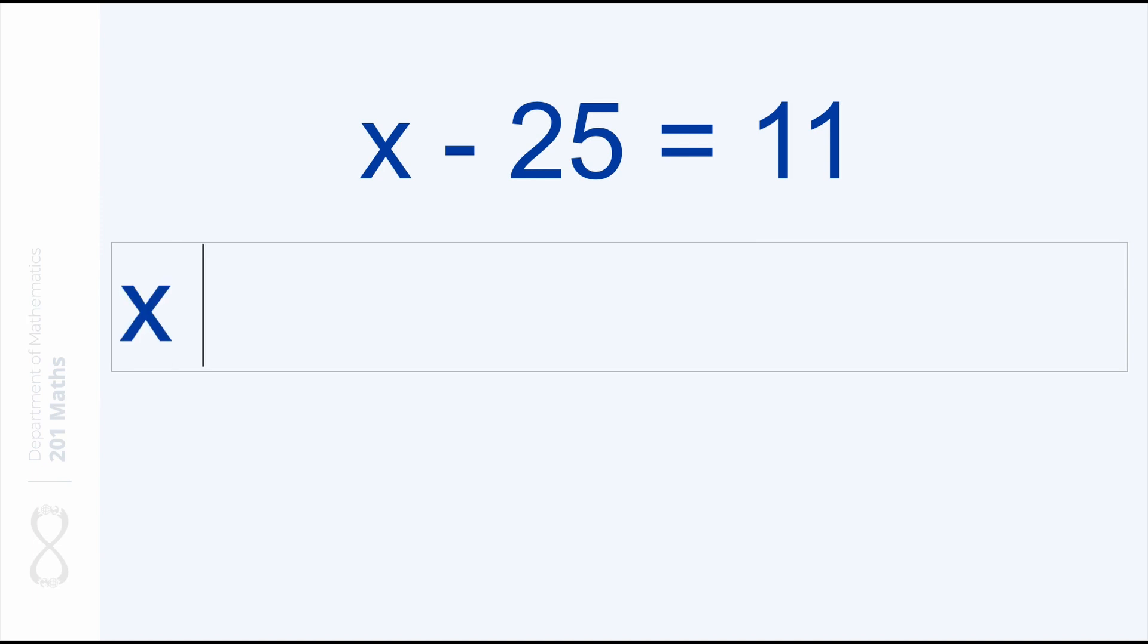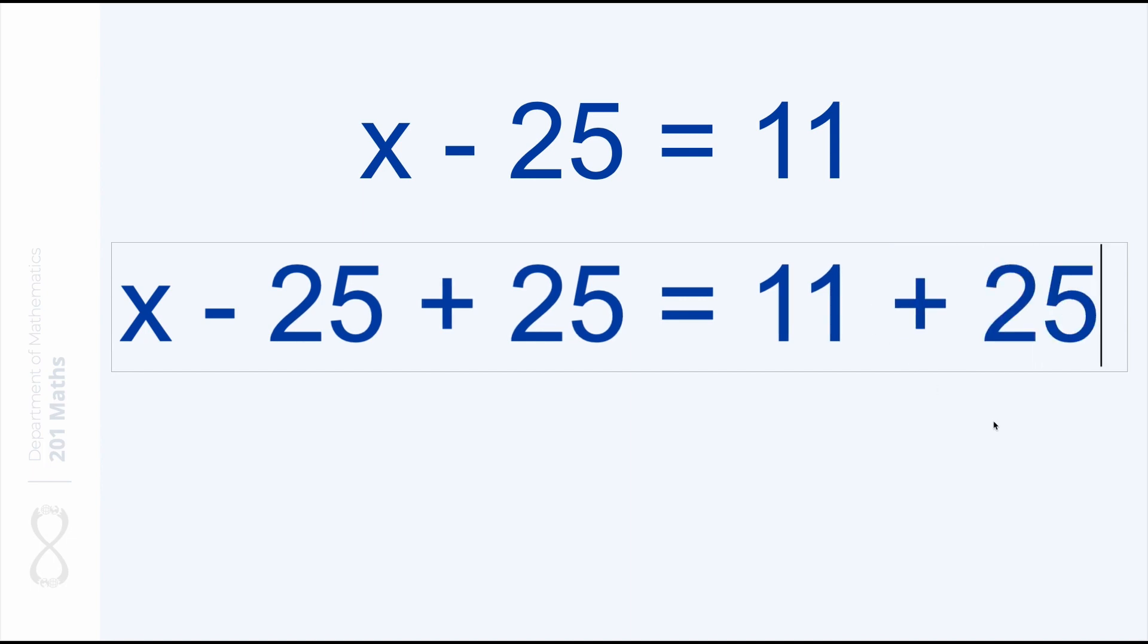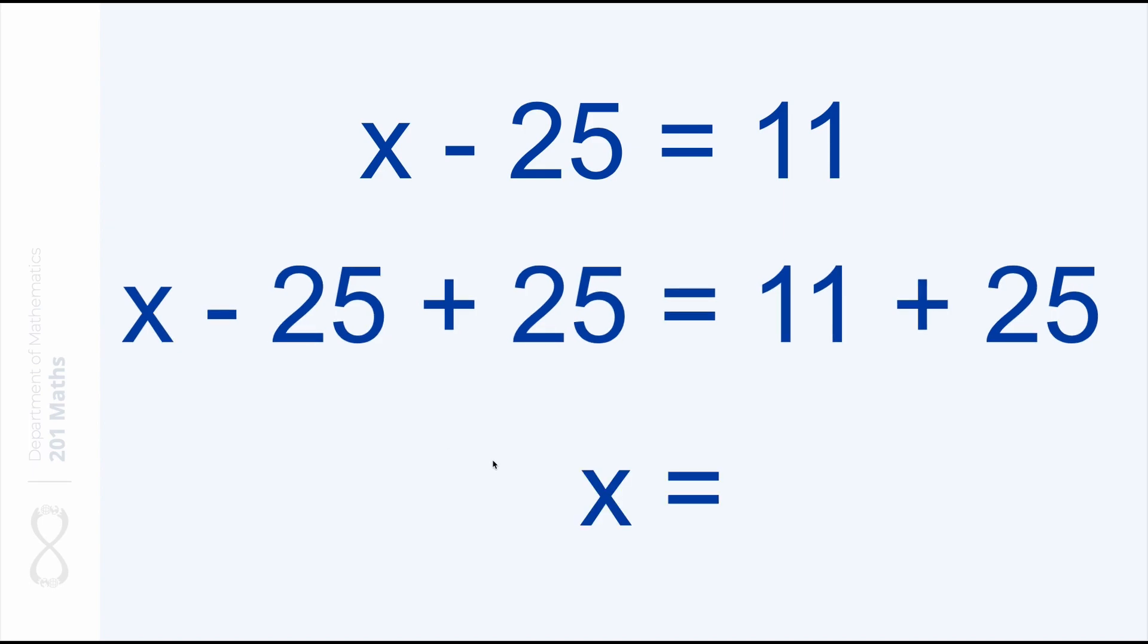Let's look at this equation. So again we want x by itself, so we have to neutralize this minus 25. And we do that by applying the exact opposite operation which is plus 25. And on the other side we do the exact same. We also add 25 so both sides are in equilibrium. Now we have successfully left x by itself on one side, and on the other side we calculate the result of this operation and it gives us 36. 11 plus 25 is 36, which is the value of x in this equation.